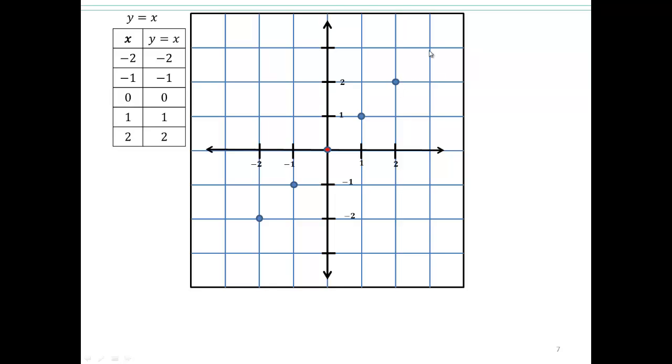Those are our coordinates. If we keep plotting them, you'll see that you'll just keep going diagonally like that. If you connect all those points, you can see they form a line. So the equation y equals x is this straight line.